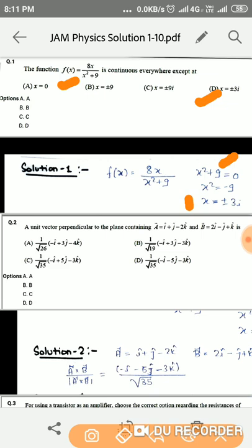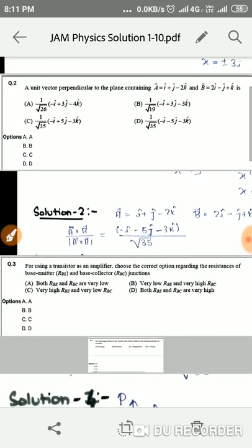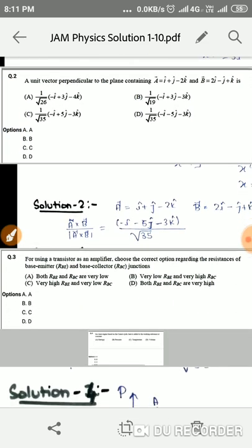Moving to the second question, we have to find a unit vector perpendicular to the plane containing vector A and vector B. So we have to find a vector that is perpendicular to both vectors. How can we find this? We can find this by finding the cross product of vector A and vector B.